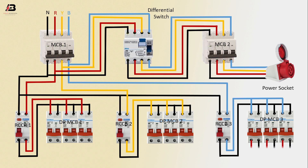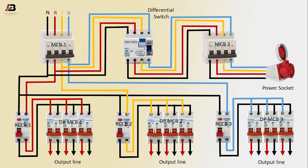Output connection from DP MCB3 for the output line. Again from DP MCB2 for the output line. And again from DP MCB1 for the output line.